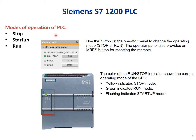The PLC has three modes of operation: stop, startup, and run. There are three LEDs that show the current status. You can use the button on the operator panel to change the operating mode between stop and run. The operator panel also provides an MRES button for resetting the memory.